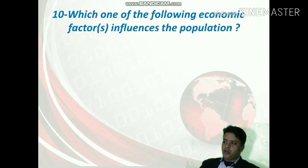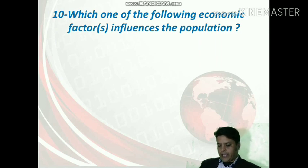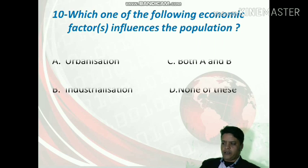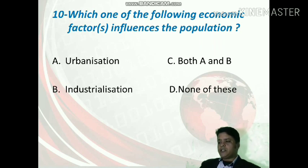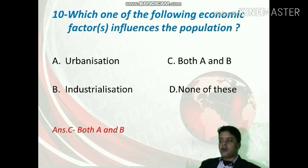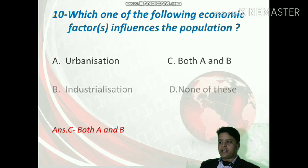Which one of the following economic factors influences population? We are discussing economic factors now. The options are urbanization, industrialization, both A and B, or none of these. The correct answer is option C — both urbanization and industrialization affect the population.